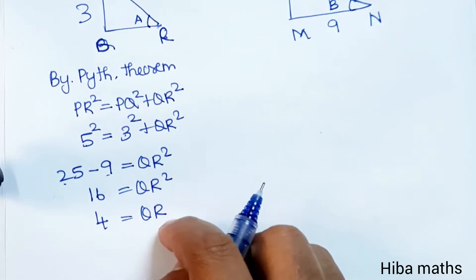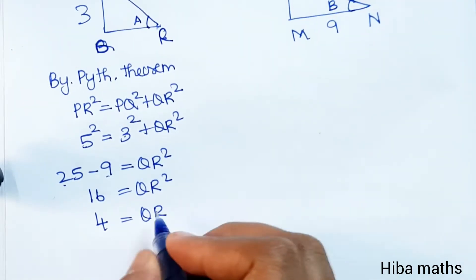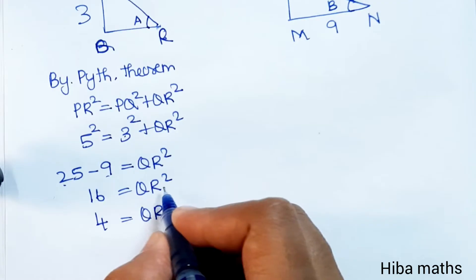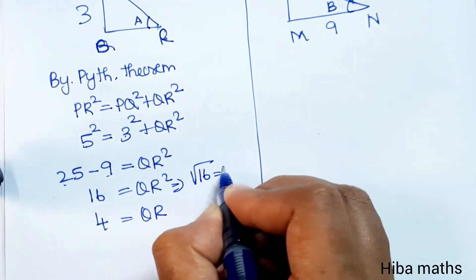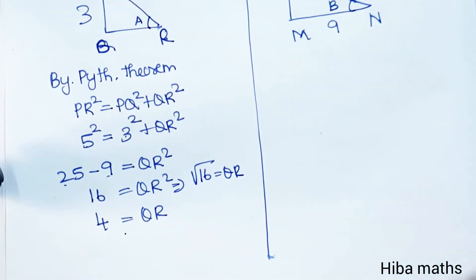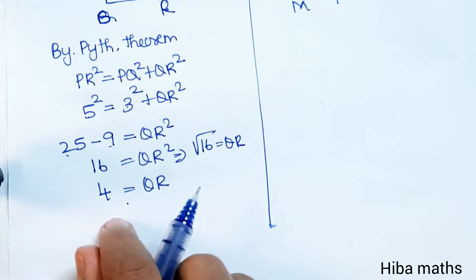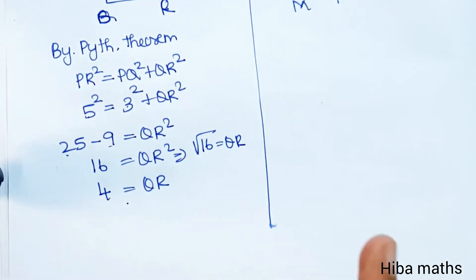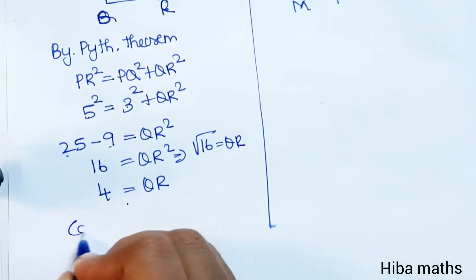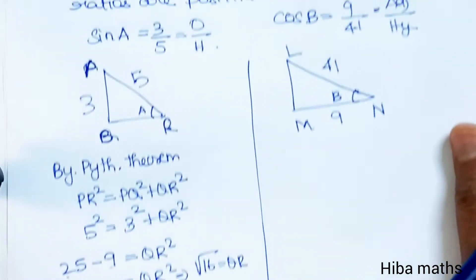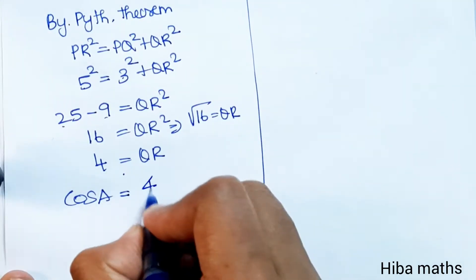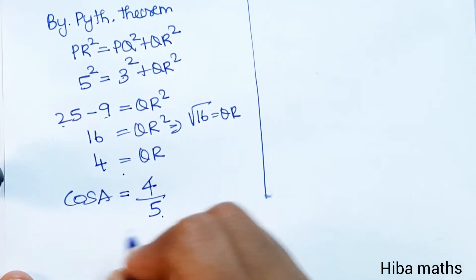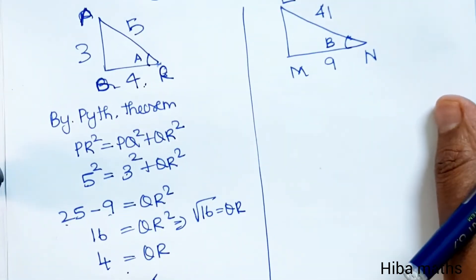Now with the right angle triangle, we can write the value of cos A. Cos A equals adjacent by hypotenuse. The adjacent value is 4 and the hypotenuse is 5, so cos A equals 4 by 5.